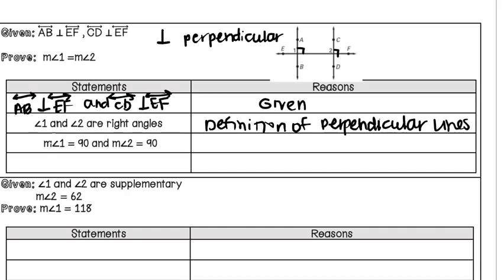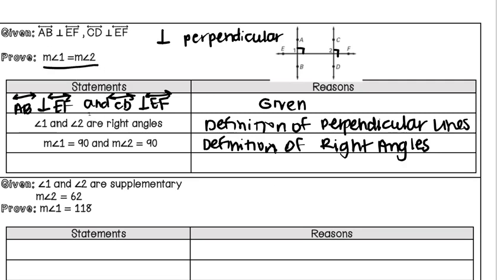Since we know they are right angles, we can say the measure of angle 1 equals 90, and the measure of angle 2 equals 90, relying on the definition of right angles — right angles are always 90 degrees. At this last point, if you're stuck, go back and look at what we need to prove: the measure of angle 1 equals the measure of angle 2. Both were defined above as equal to 90, so we can say this is true because of the transitive property of equality.